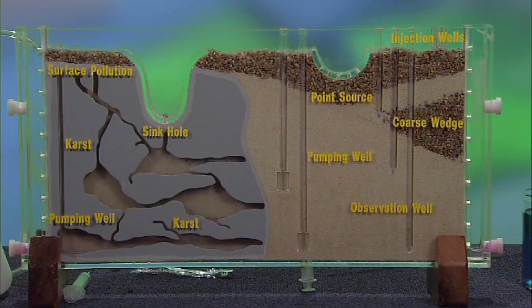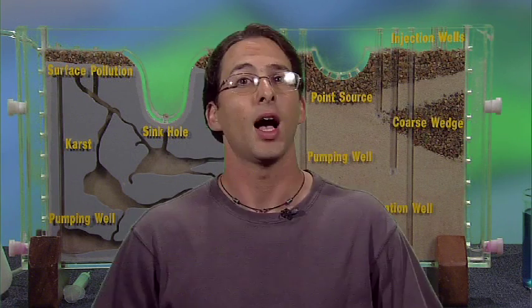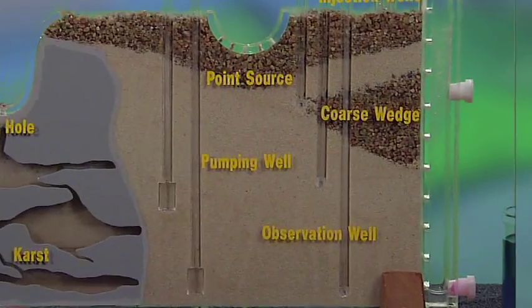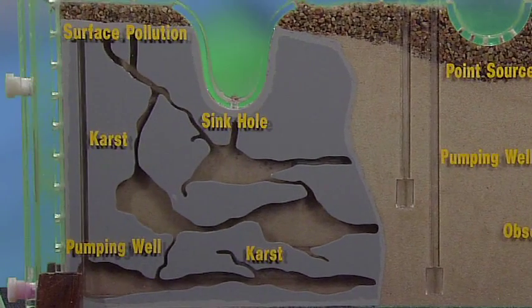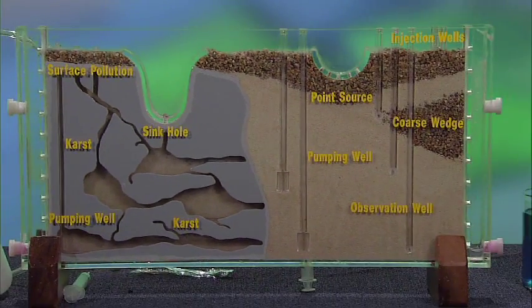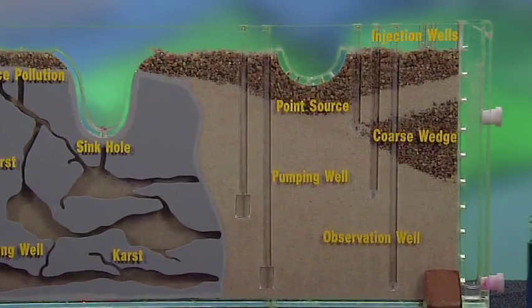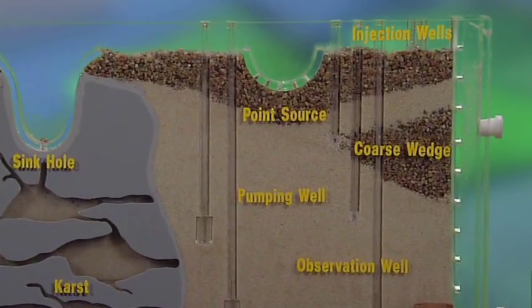This is a model that shows the difference between sandstone aquifers and karst aquifers. I'm going to show you how water and contaminants move slowly in sandstone and quickly in karst. This side of the model is a sandstone aquifer, and this side is a karst aquifer — one model, two aquifers. Let's look at the sandstone aquifer first.